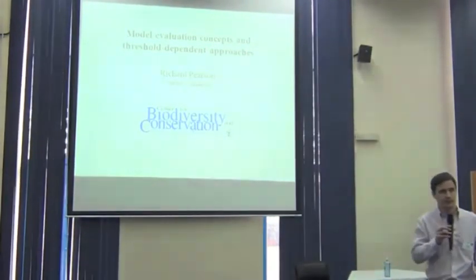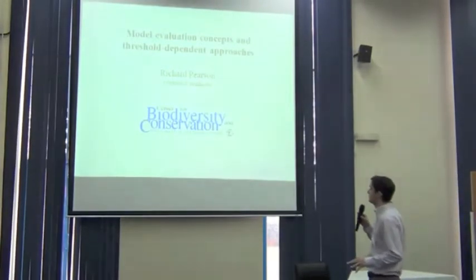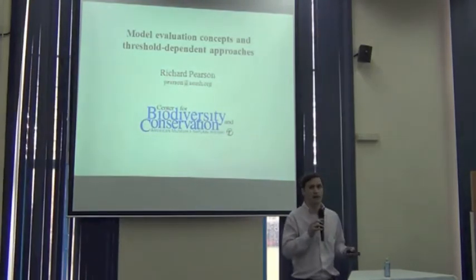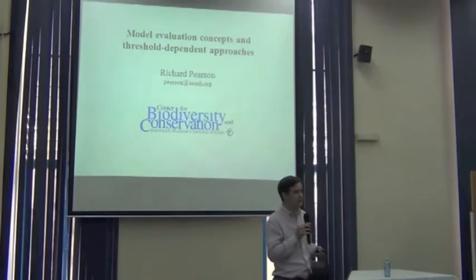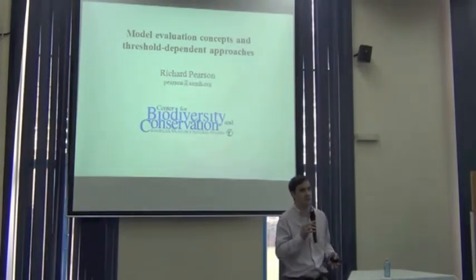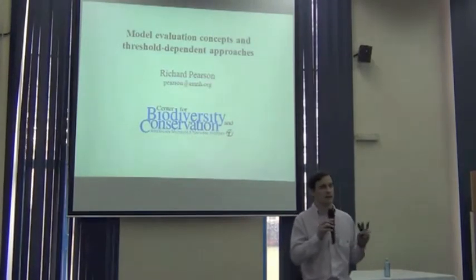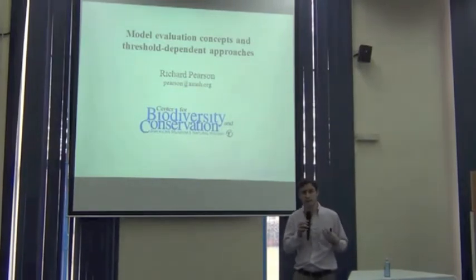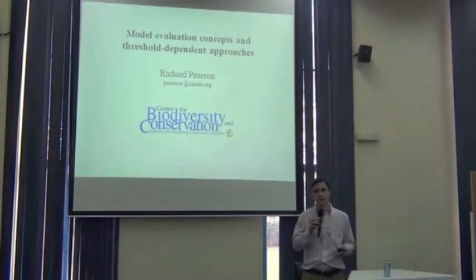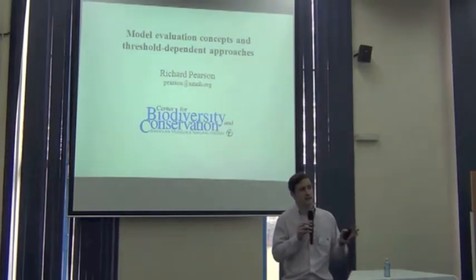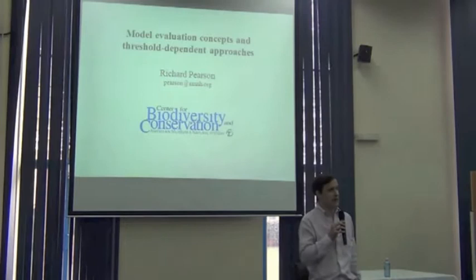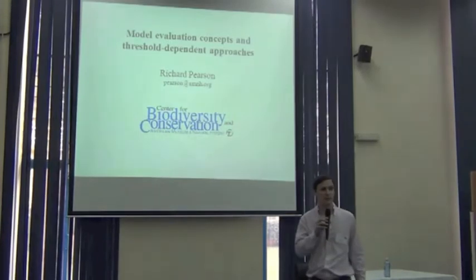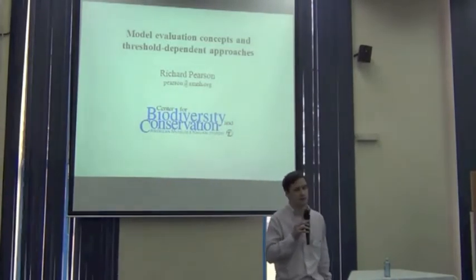The goal for the next few minutes is a relatively short introduction to some general concepts about how we can evaluate the models, how we can generate data to evaluate the models, and then some of the most common statistics used to evaluate models. We're really going to explain two approaches that are most widely used - binomial tests combined with the proportion of presences correctly predicted, and then the AUC, or the area under the receiver operating characteristic curve, which is a bit of a mouthful.